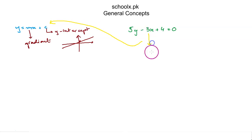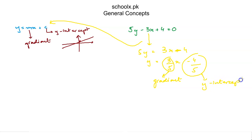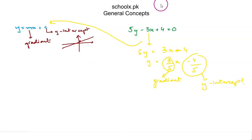To do that, we make y the subject. So 5y equals positive 3x minus 4, which gives y equals 3/5 x minus 4/5. So the gradient is 3/5 and the y-intercept is negative 4/5.